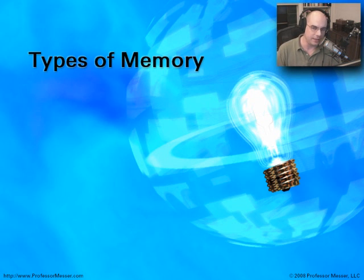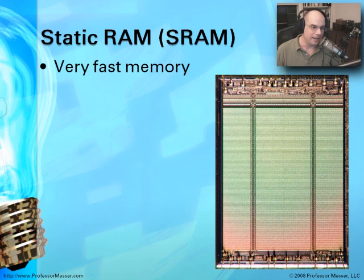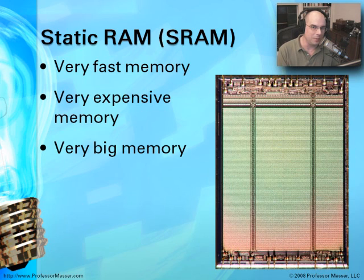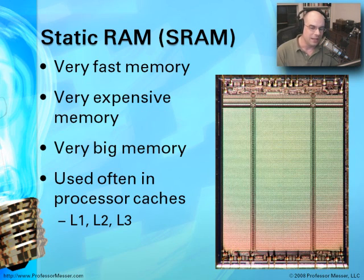Now that we know what memory looks like, let's talk about the types of memory on the modules themselves. The first one is not on a module — it's called Static RAM. This is very, very fast memory, and it's also very expensive — that's why you don't have static RAM all over your system. It also takes up a lot of real estate. Because static RAM stays that way without any refreshing, it's perfect for a cache. We can put information into the cache and read it out very quickly, making it perfect to go inside a CPU.